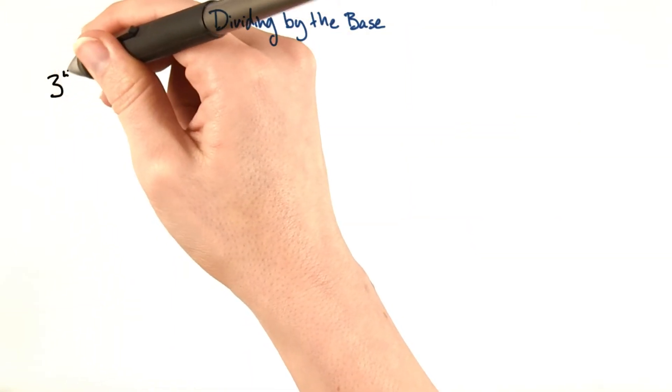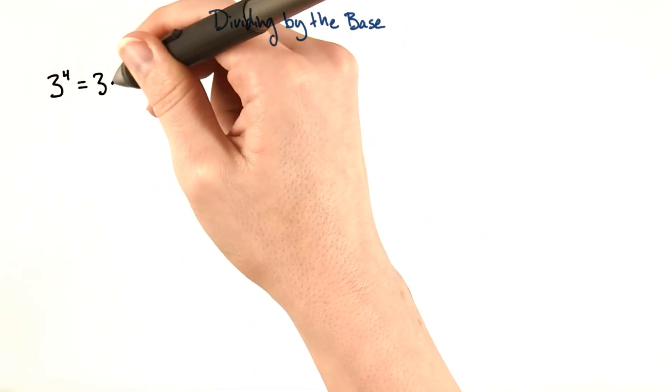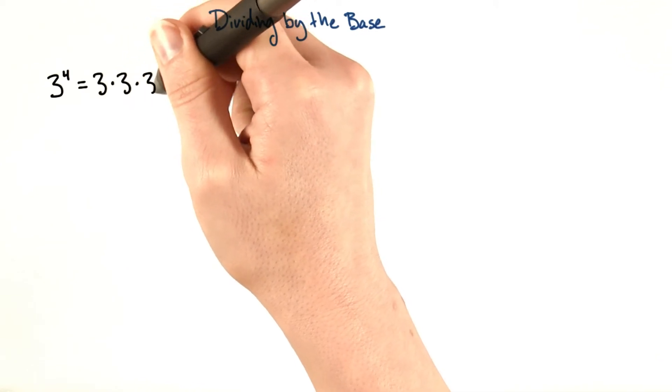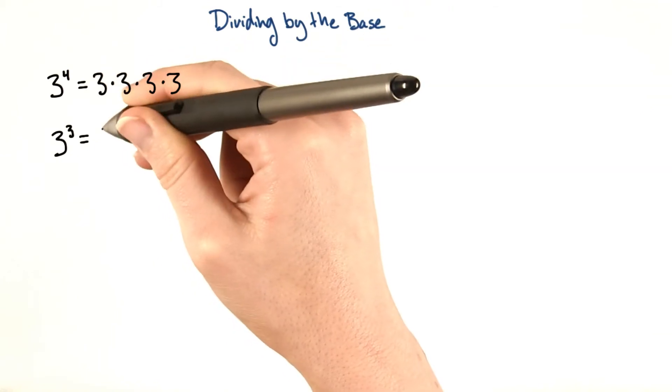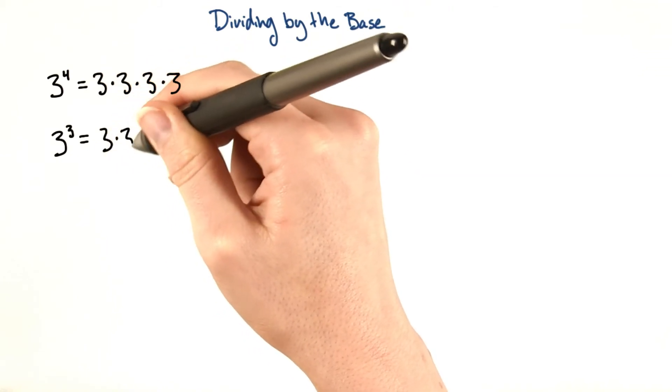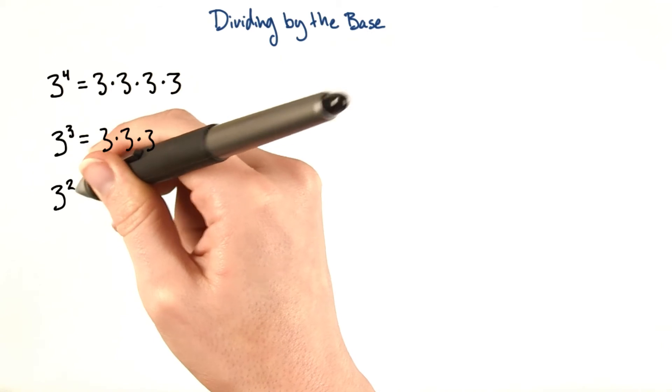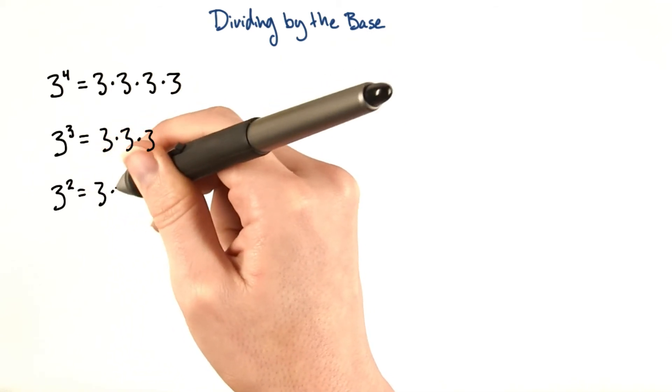So 3 to the fourth is 3 times 3 times 3 times 3. 3 cubed equals 3 times 3 times 3. 3 squared is 3 times 3.